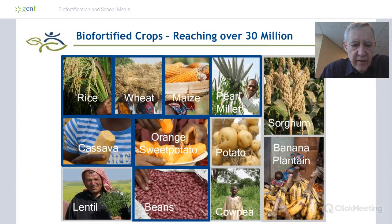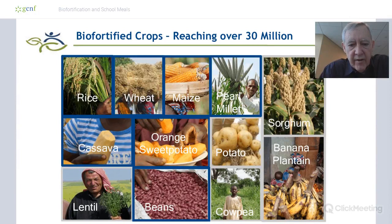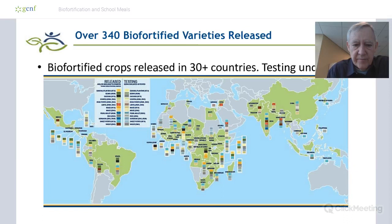These are our products. The ones in the blue shading are those we've invested the most in: high zinc rice, high zinc wheat, high provitamin A maize, high iron pearl millet, high provitamin A cassava, the best known being high provitamin A orange sweet potato, and high iron beans. We've also done some work on high iron zinc sorghum, iron and zinc potato, provitamin A bananas, high iron cowpea, and high iron and zinc lentils, though we haven't invested as much in those.